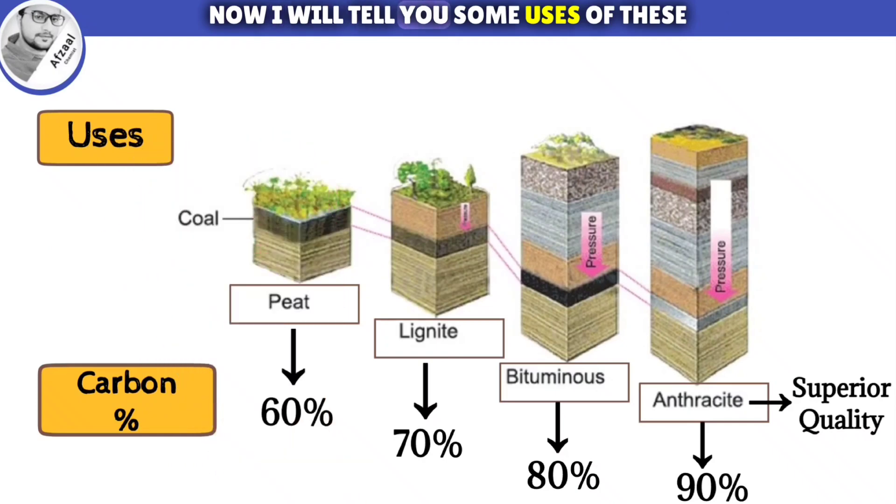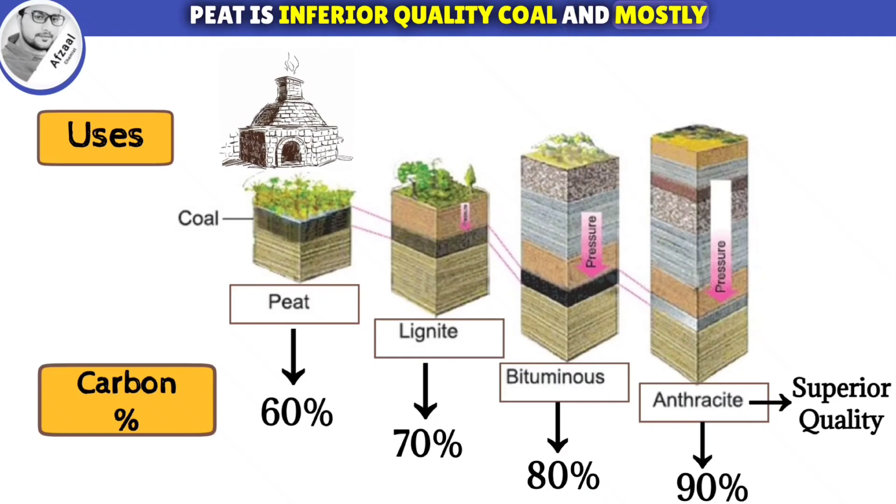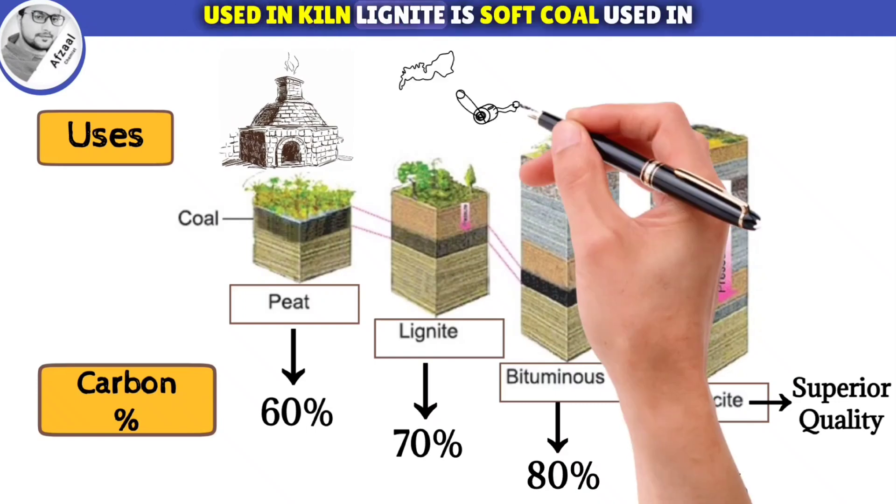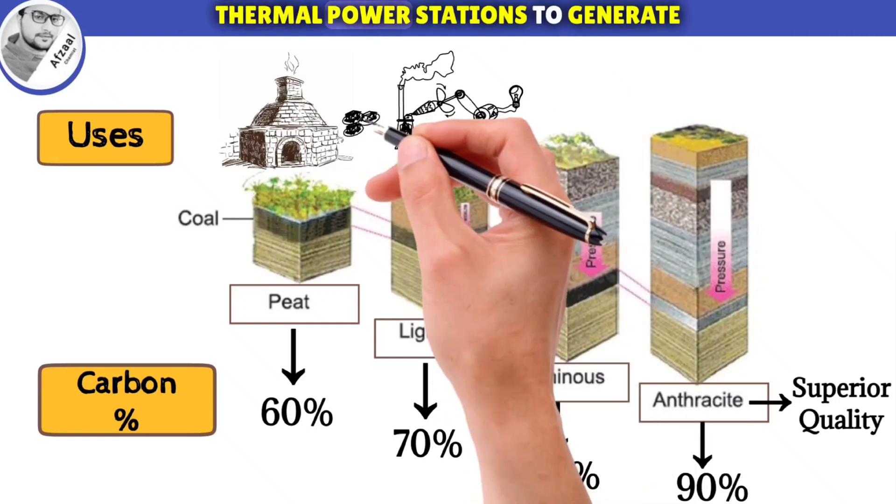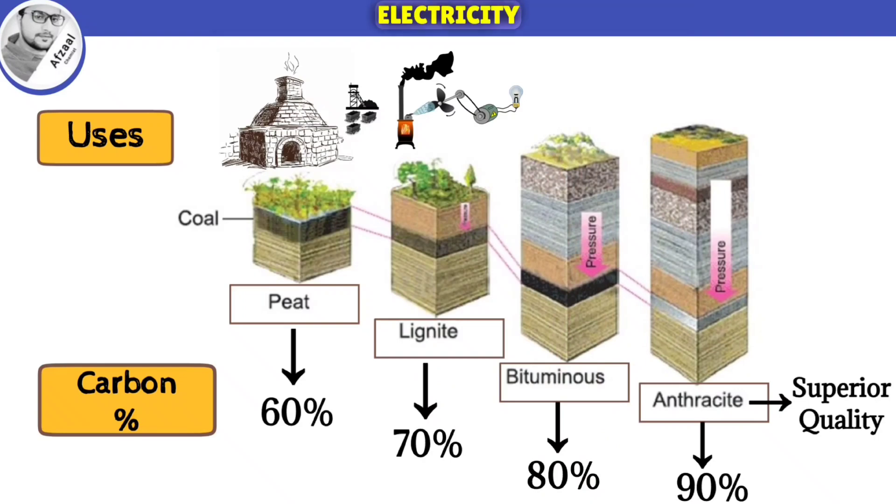Now I will tell you some uses of these types of coal. Peat is inferior quality coal and mostly used in kilns. Lignite is soft coal used in thermal power stations to generate electricity.